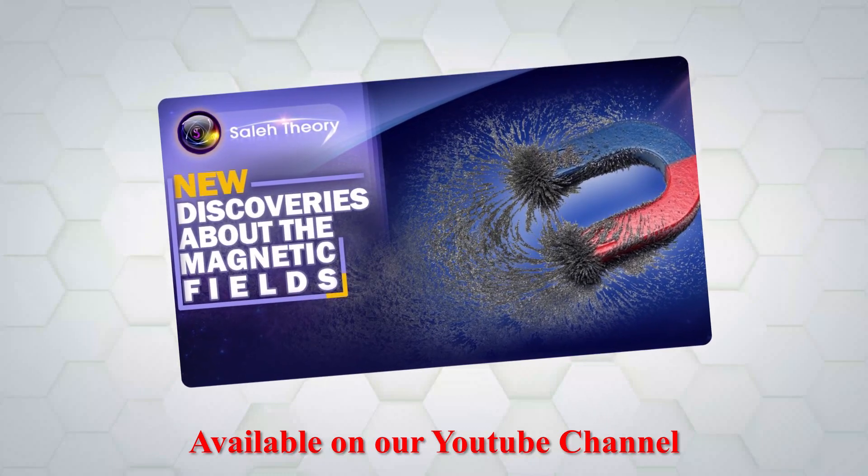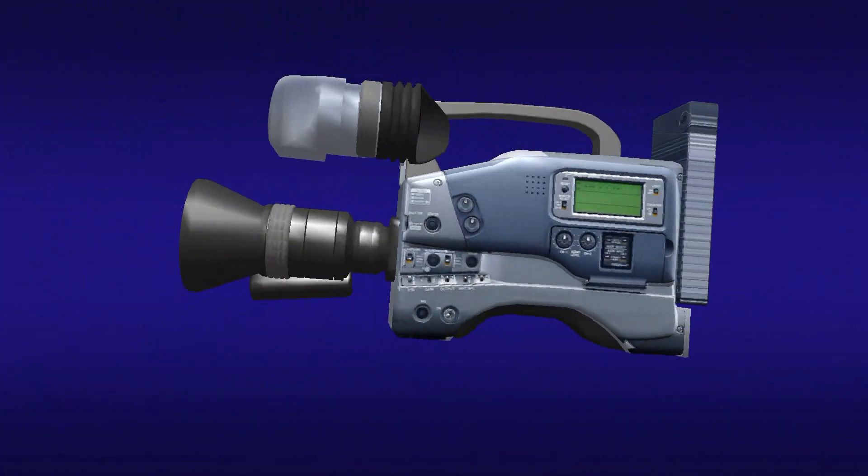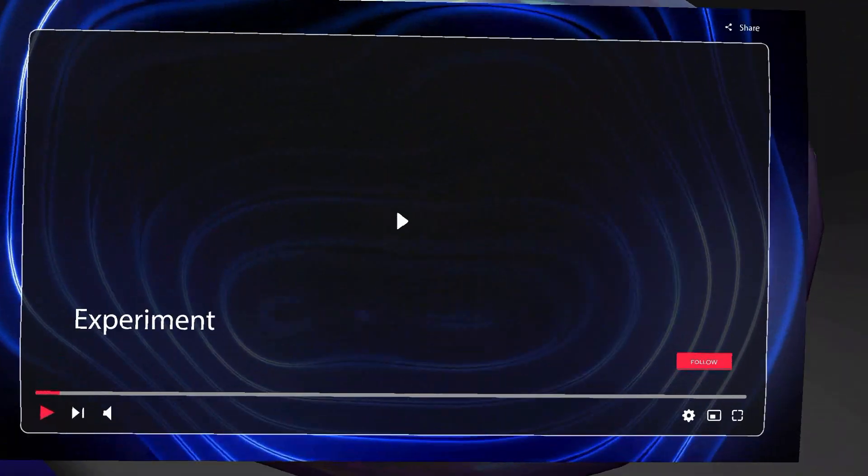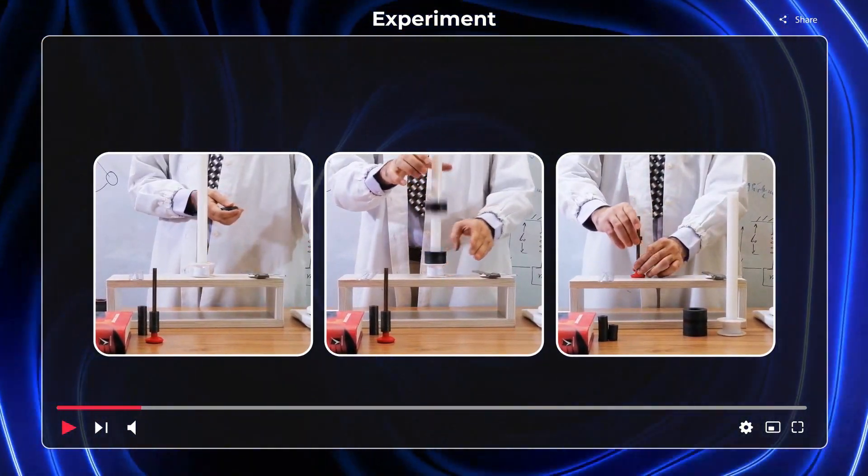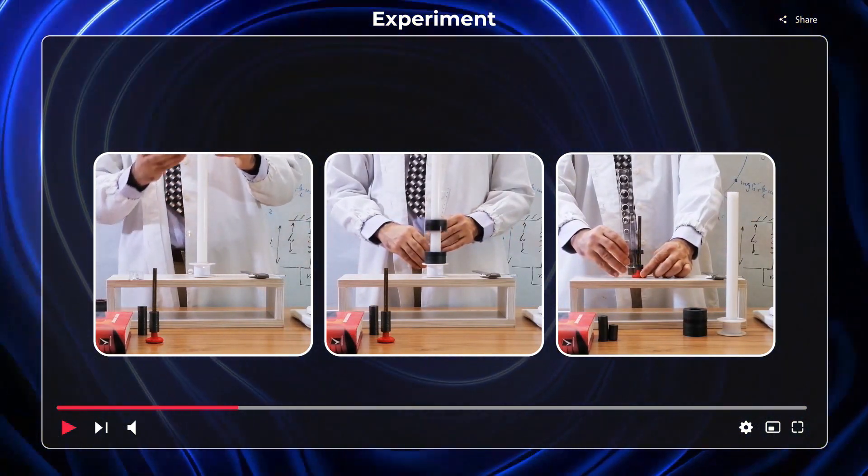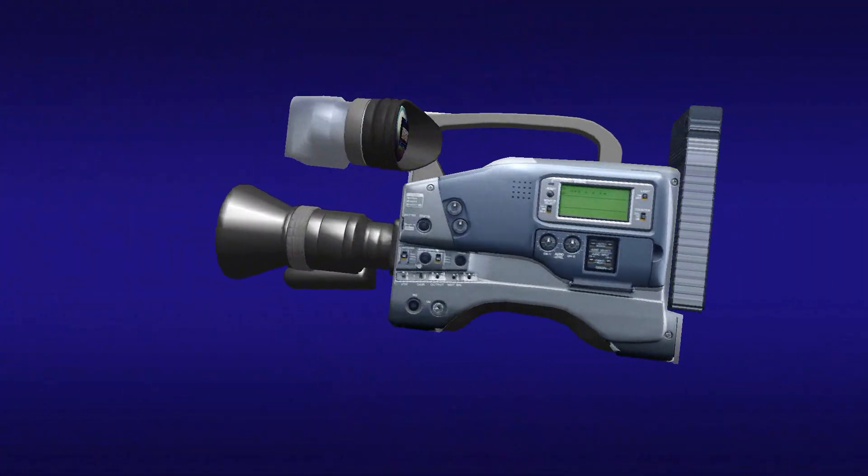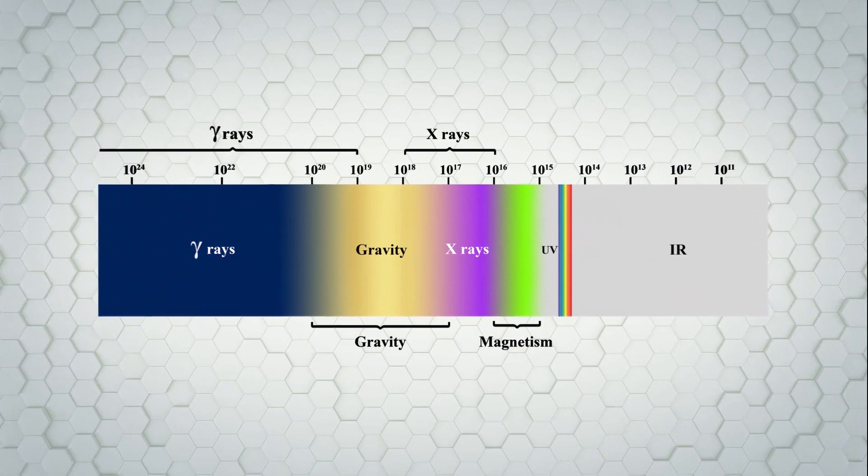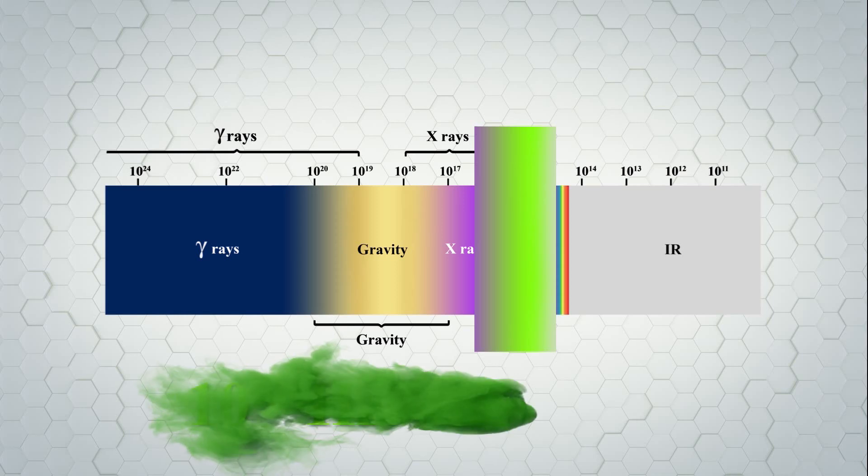In the previous article entitled New Discoveries About the Magnetic Fields, we have presented the results of an experiment whose aim was the experimental calculation of the frequency of magnetic waves. In the experiment, the frequency range taking into account the mass and the type of magnet was found to be between 10 to the power of 15 Hz to 10 to the power of 16 Hz.